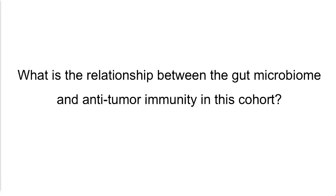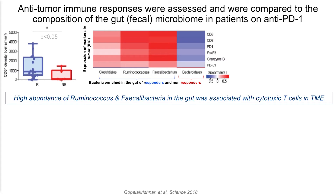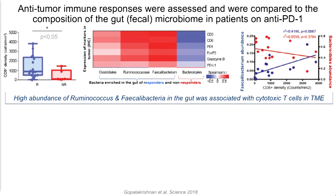We next asked about the relationship between these gut bacteria and what's going on in the tumor microenvironment. No surprise — patients who responded to therapy tended to have more T-cells in the tumor at baseline. When we plotted the abundance of specific bacteria in the gut microbiome against markers of T-cell cytotoxicity within the tumor microenvironment, we found that patients with a favorable microbiome — more Clostridiales, Faecalibacterium, and Ruminococcus — had more cytolytic T-cells within the tumor microenvironment, whereas those with more Bacteroidales had a lower abundance. These were highly correlated.